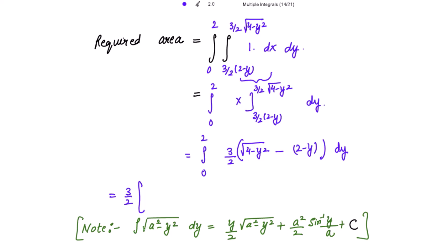The formula to use is: ∫√(a² − y²) dy = (y/2)√(a² − y²) + (a²/2) sin⁻¹(y/a). For √(4 − y²), treating 4 as a² means a = 2. So the integration becomes (y/2)√(4 − y²) + (4/2) sin⁻¹(y/2), which is (y/2)√(4 − y²) + 2 sin⁻¹(y/2). The integration of (2 − y) gives 2y − y²/2.